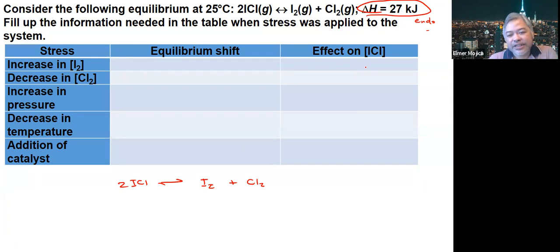Increase in I2. If there's an increase in I2, that means this goes up. The reaction favored is the one that utilizes it, so the backward reaction is favored.